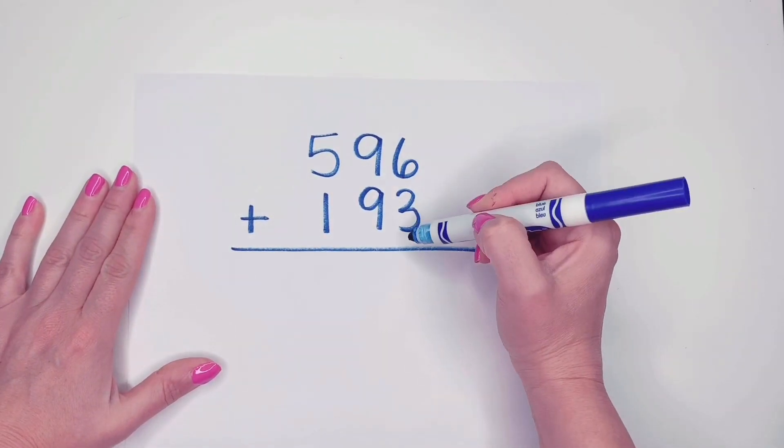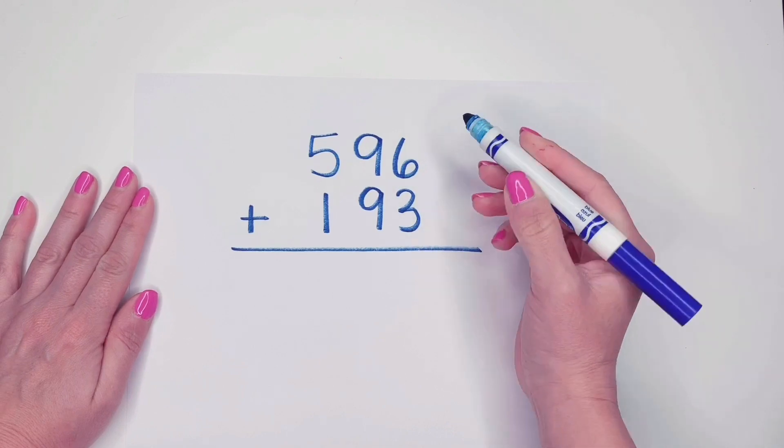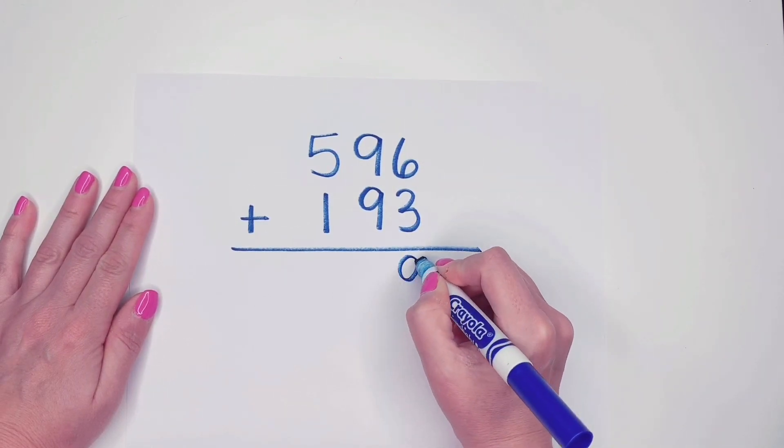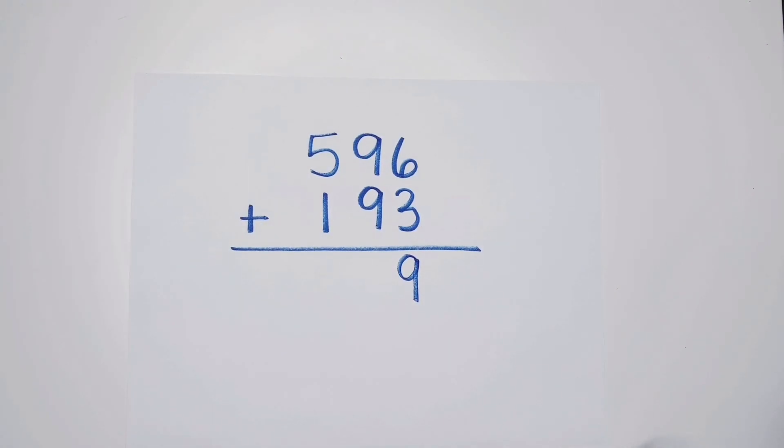Okay, I'm going to start with my ones. We always have to start with our ones. Six plus three is nine. I'm keeping it really nice and neat so my columns are all together. My ones are all in a vertical line.